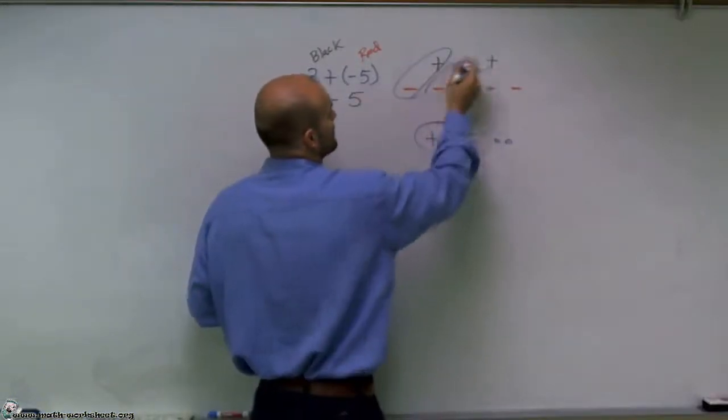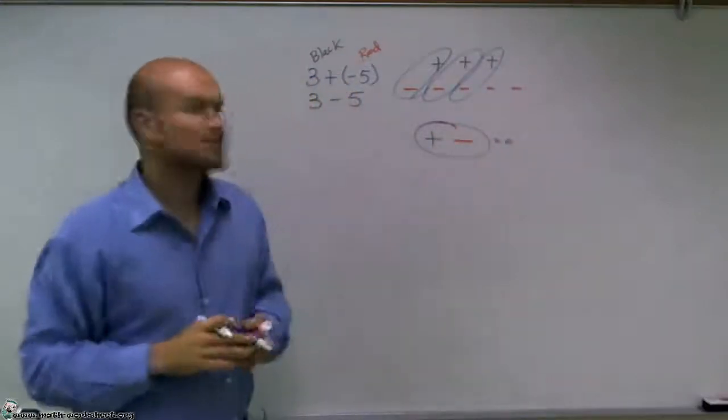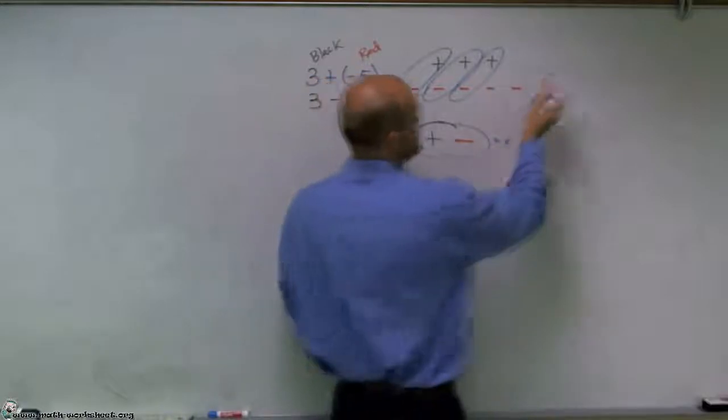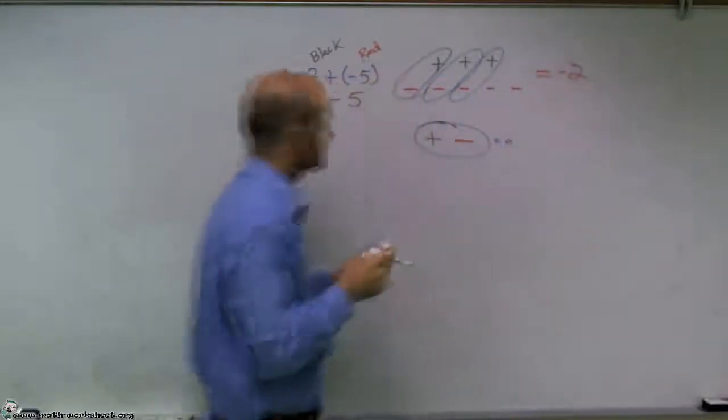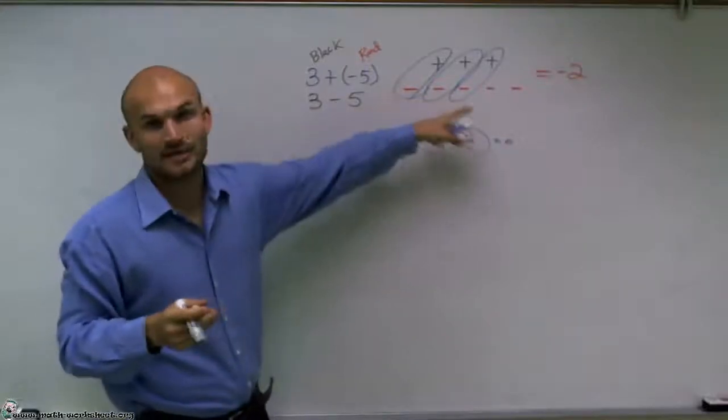So I have one pair here, another pair, and another pair. And what you'll notice is my final answer for this is going to be negative 2. So, 3 plus a negative 5 equals negative 2.